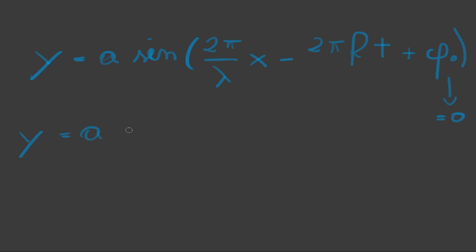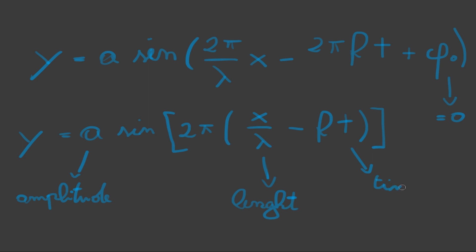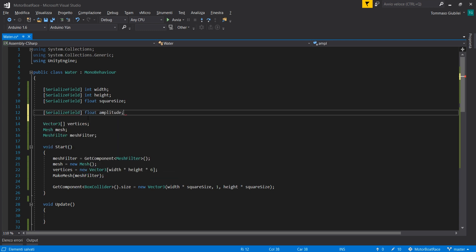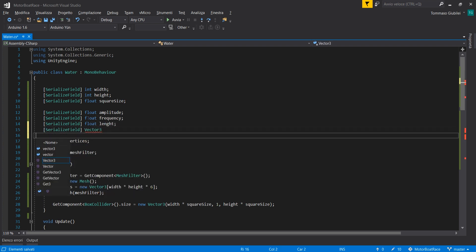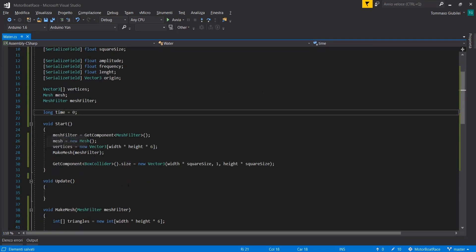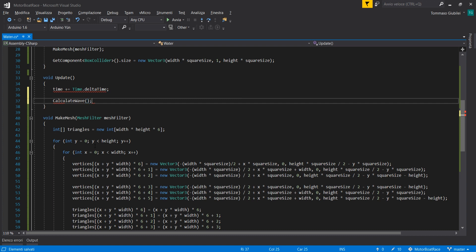We are going to use the wave equation to make each vertex move according to the wave. The y-value of each vertex is computed using this equation. We set the variables for our wave: amplitude, frequency, length, and origin point. The origin point is a Vector3, the others are float variables, and there is also a time variable. I've done this wrong — I wrote a long type variable — and you will see the bug this creates.